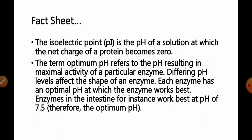Talking about the isoelectric point or pH is the pH of a solution at which the net charge of a protein or a solution becomes zero or it is neutral. Whereas, the term optimum pH refers to the pH resulting in the maximum activity of a particular enzyme. Differing pH levels can affect the shape of an enzyme and thereby the activity of an enzyme. Differing pH levels affect the shape of the enzyme. Each enzyme has an optimal pH at which the enzyme works at its best. Enzymes in the intestine for instance work best at pH 7.5.